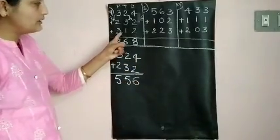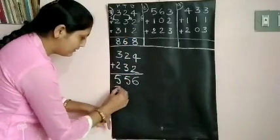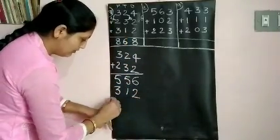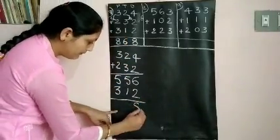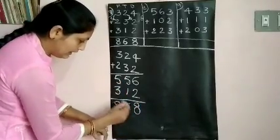Now you will have another number 312. So for this answer add the third number that is 312. 6 plus 2, 8. 5 plus 1, 6. 5 plus 3, 8.